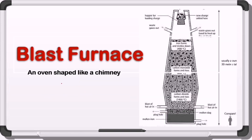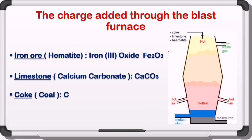Now let's check the blast furnace itself. It's an open shape like a chimney. The top area in the furnace is the place where we add the raw material, or we can say the charge. We have a blast of hot air to start the combustion, and then we have two openings: one for the molten iron produced, one for something called slag, which is the impurities. And here we also have two exits for the waste gases. This is an overview of the blast furnace. Now let's check everything in more detail.